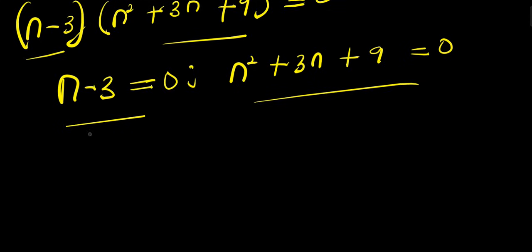Now we start with this linear one here. I move this over here, that means I have n = 3 and this is my n₁.